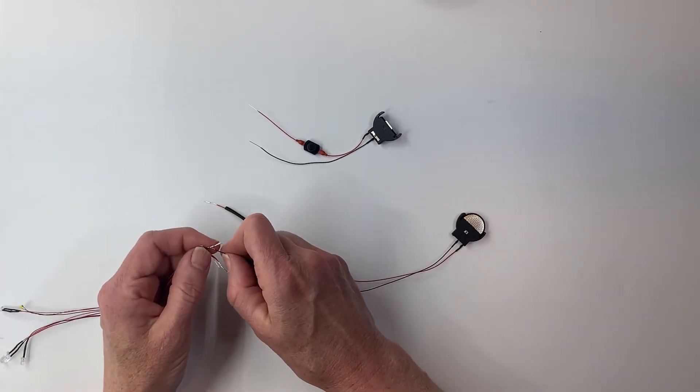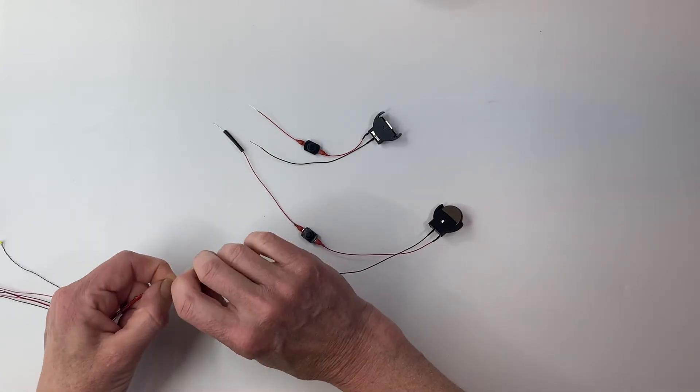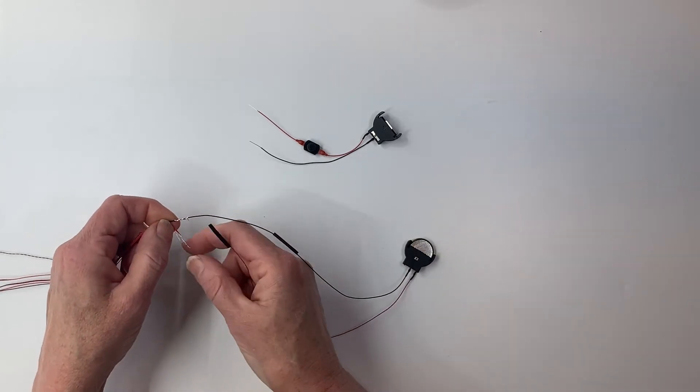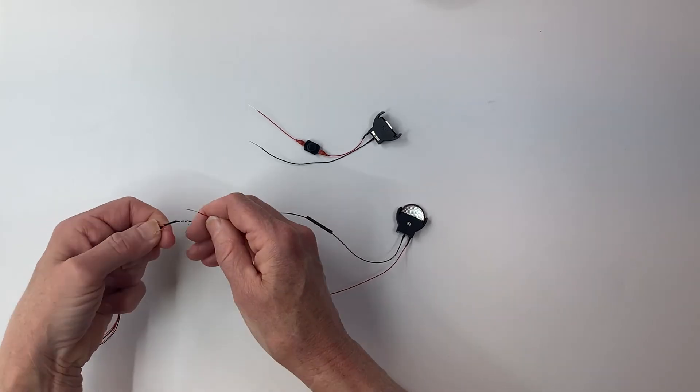Then I'm going to firmly twist the wire on the coin cell holder with the wire on all of my lights. Make sure you twist well and I'll do the same thing with the red wire and the red wire on the coin cell holder.